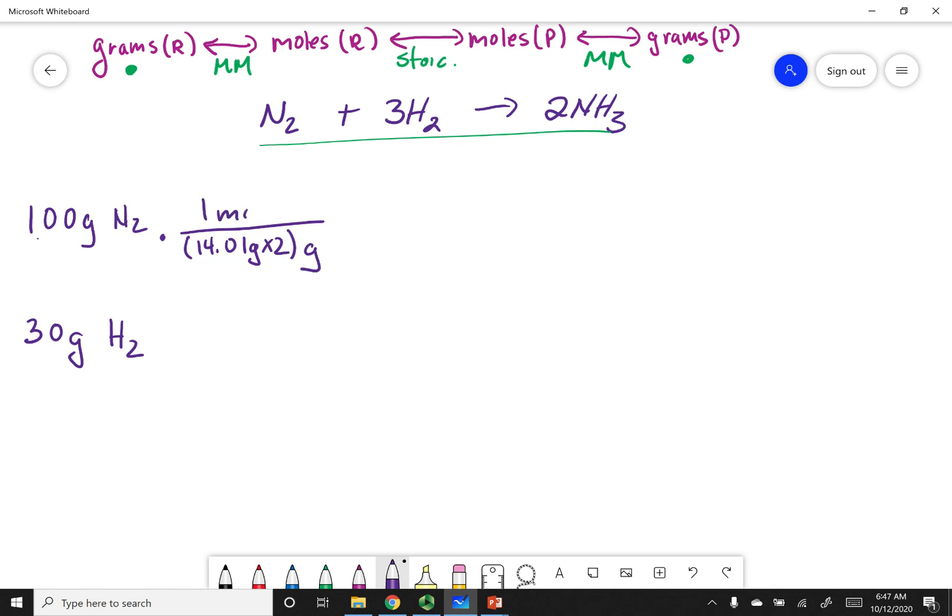Now I'm going to use stoichiometry based on my chemical equation. For every one mole of N2, I'm going to produce two moles of NH3. Grams of N2 cancel out, moles of N2 cross out, and I get 7.14 moles of NH3.